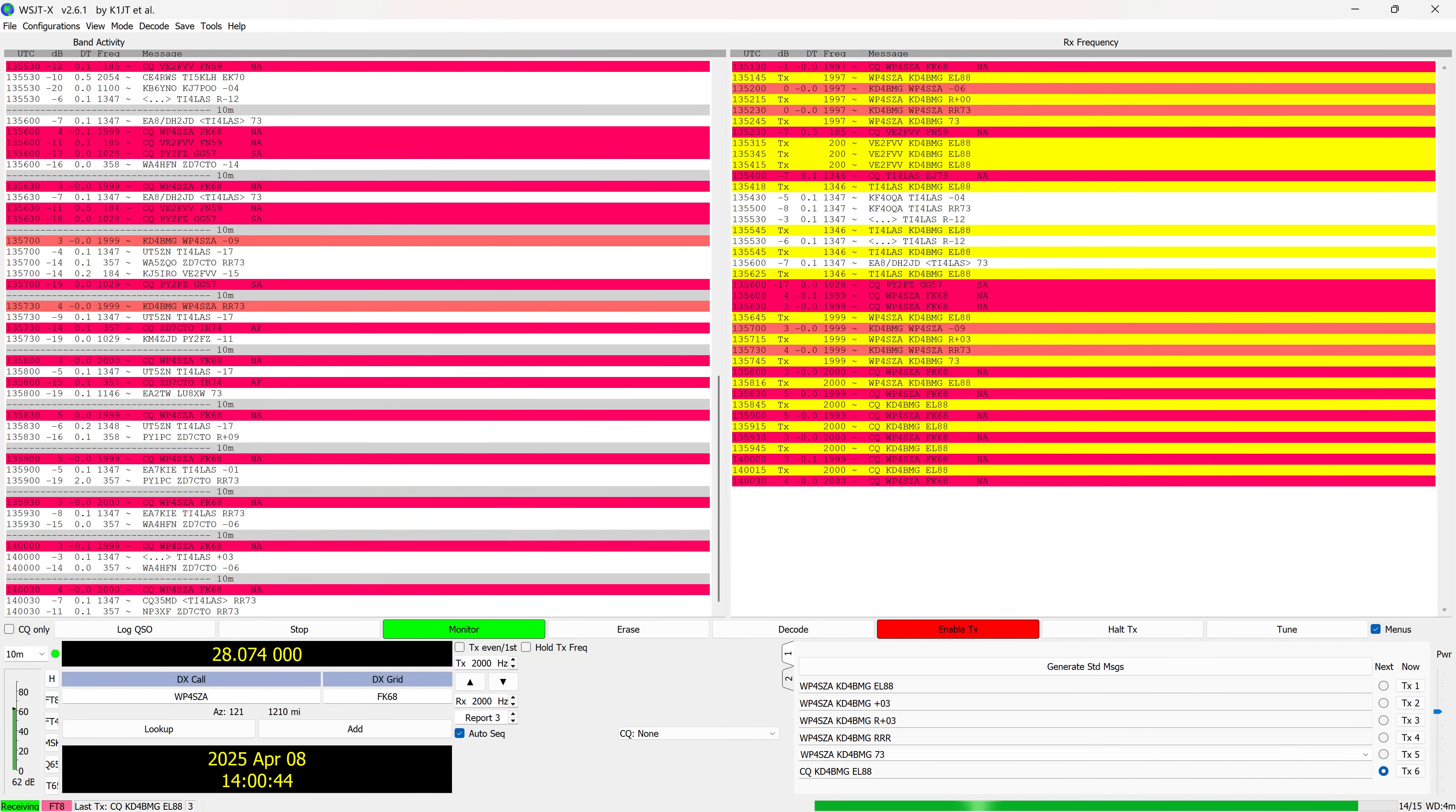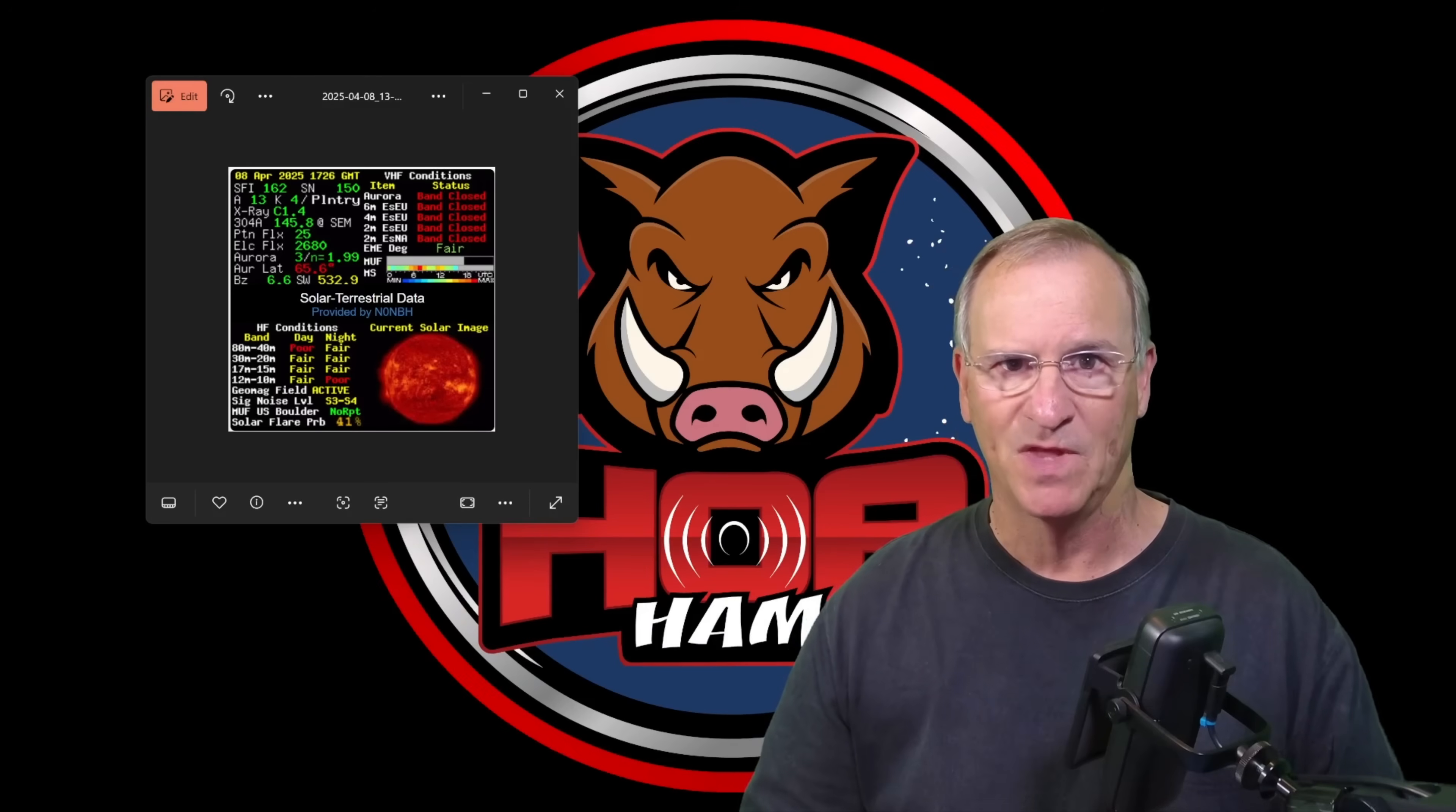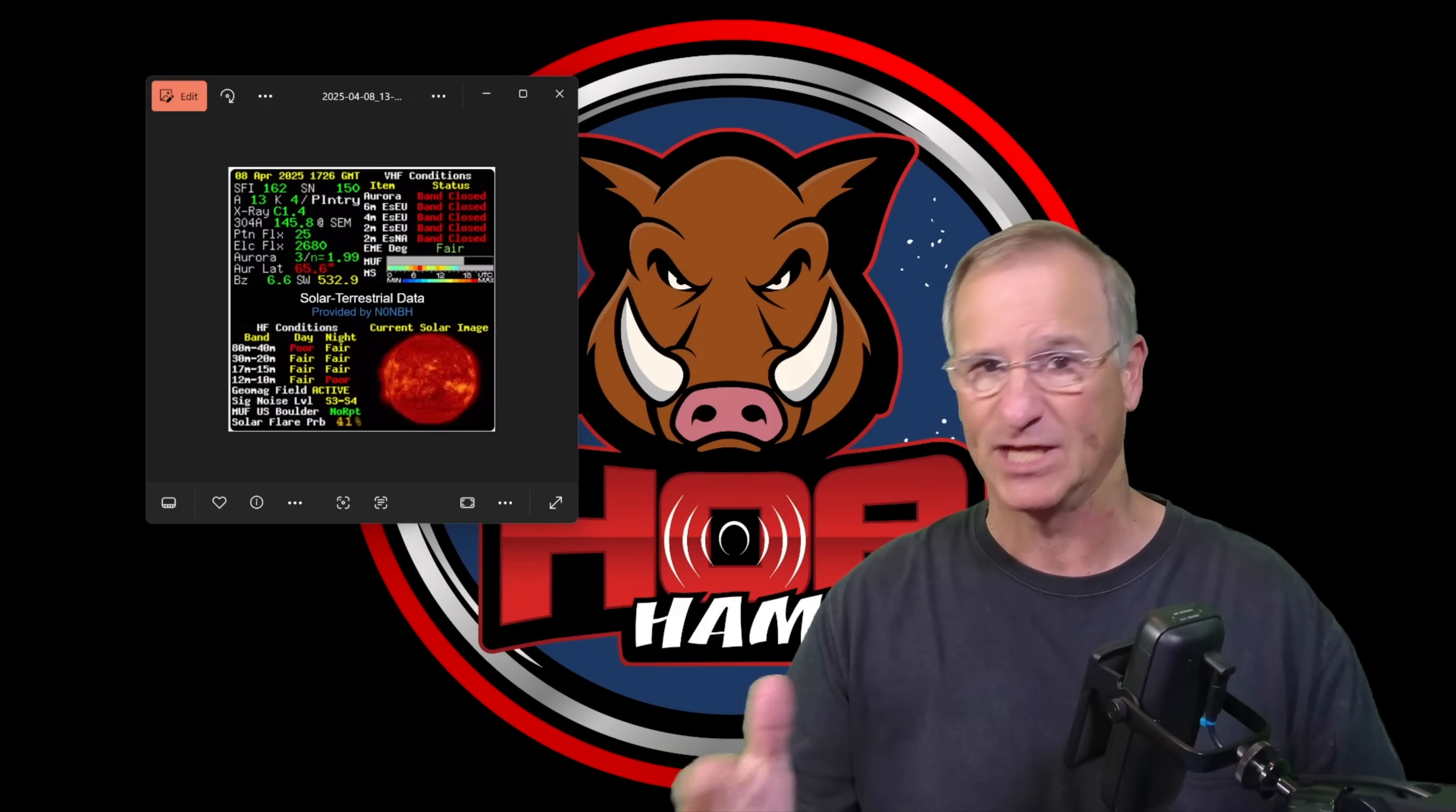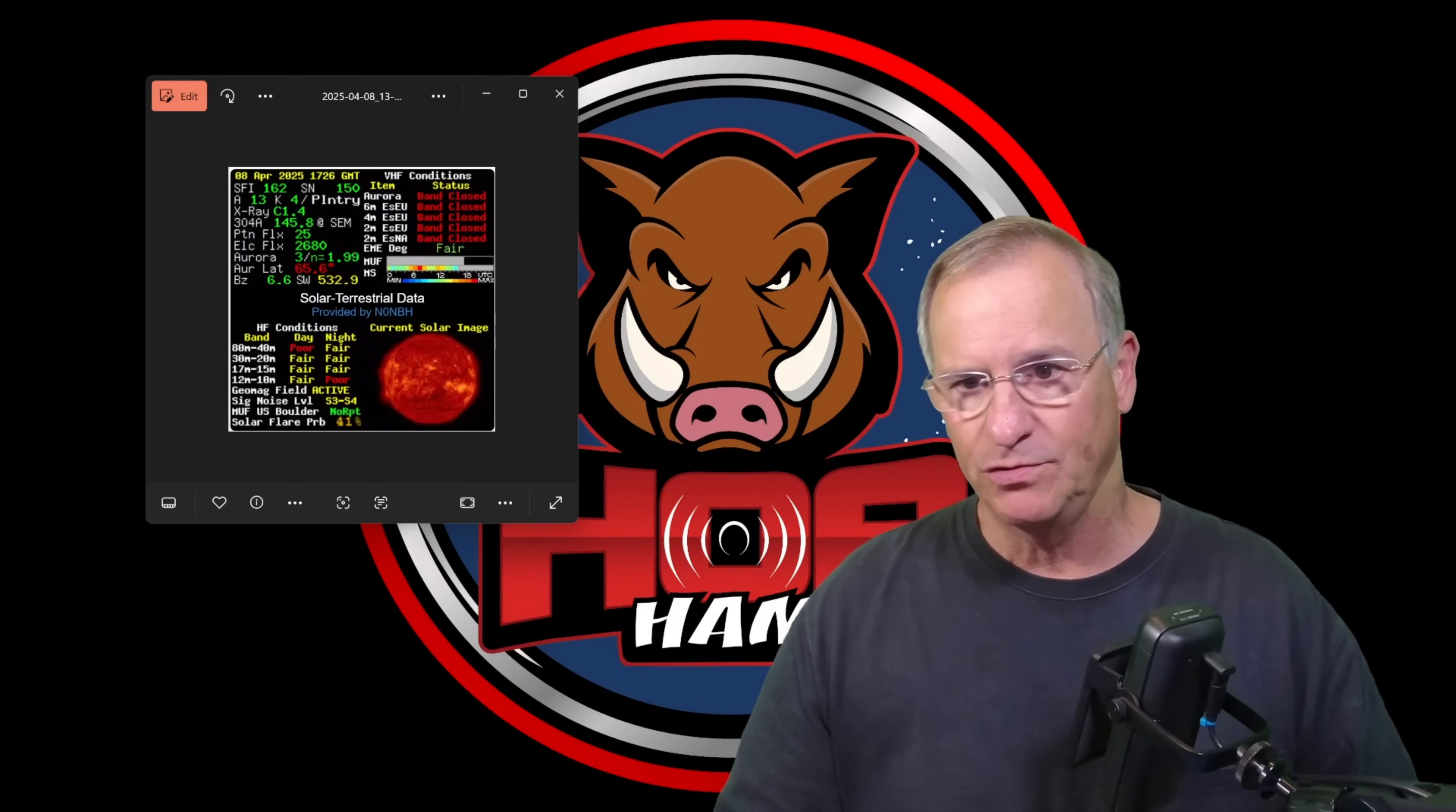I jumped on over to FT8, was able to make a couple of contacts. And you can see from PSK reporter, it's a pretty sparse map. This seems to be indicative of the conditions today. When I had my antenna, this tiny little HF750 out in free space did perform better, but the conditions were exponentially better than they are right now.